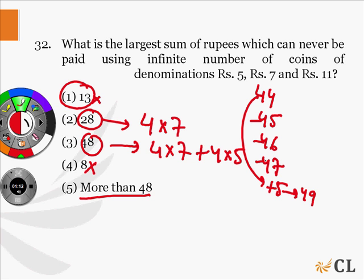44 can be made using 4 coins of denominations 11. 45 can be made using 5 coins of denominations 9. 46 can be made using 2 coins of denominations 11, 3 coins of denominations 7, and 1 coin of denominations 5.